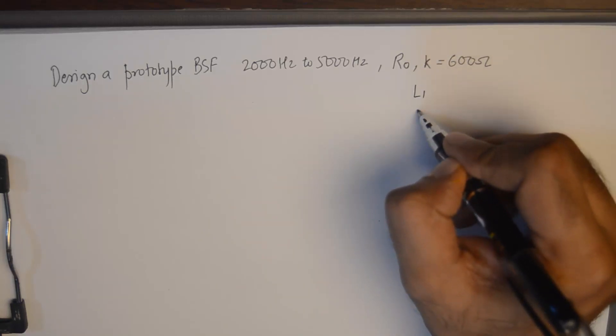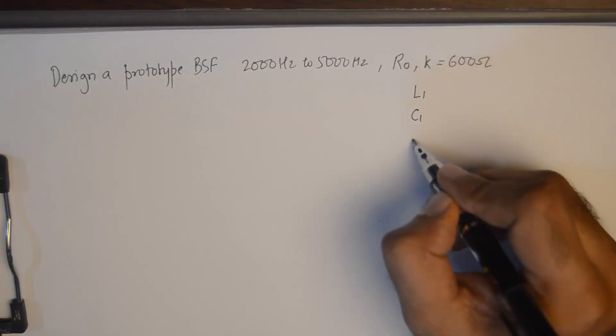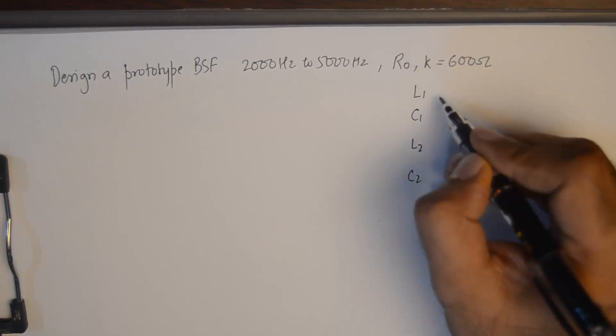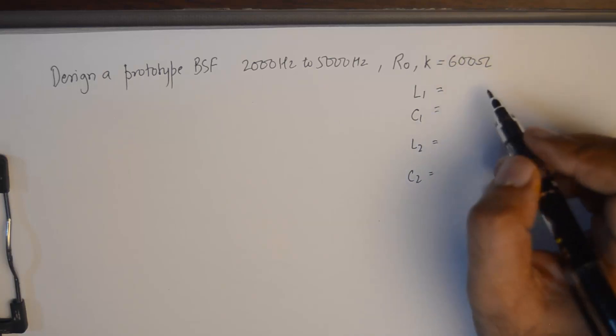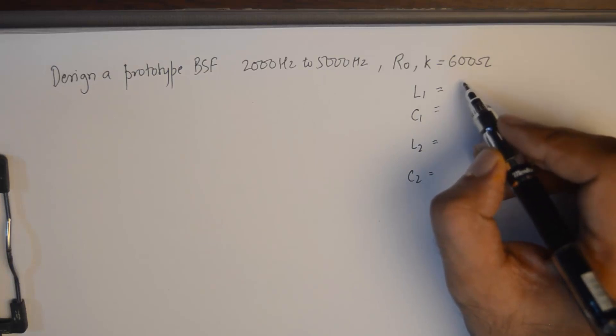Now, you've been given the values of Fc1 and Fc2 and the design impedance. You need to find the values of L1, C1, L2 and C2. If you know the formulas for these, it will be no problem for you to design the filter. So I'll write down the formulas here.